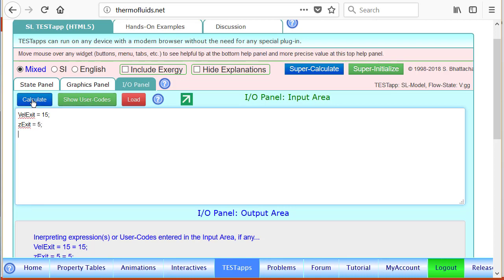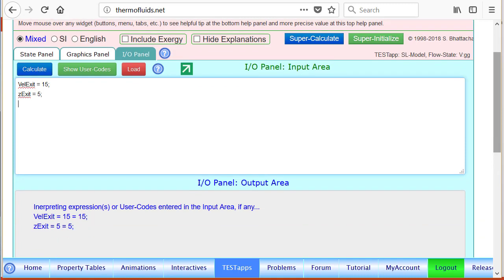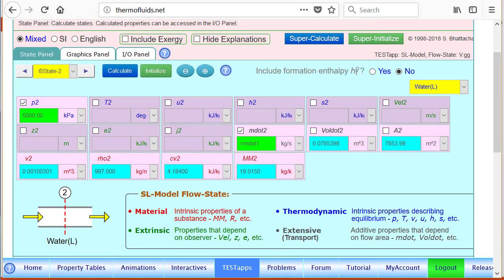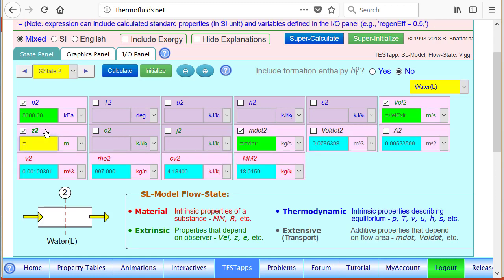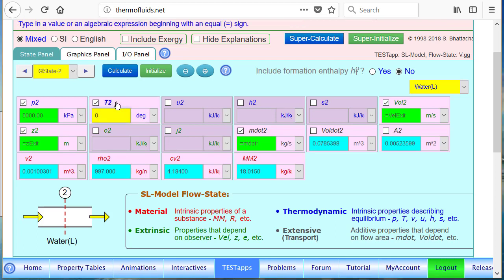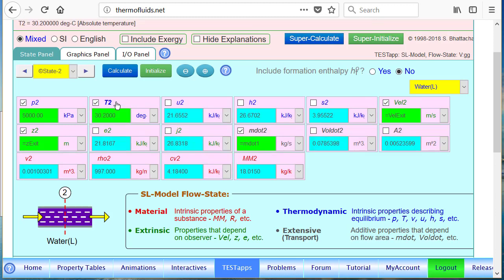So, we just do a calculate and register the changes here. Now, we can go back to the state panel, state 2, instead of writing 15, we can write vel exit. It has been registered and z should be equal z exit. So, what is the benefit of doing that? Now, we can easily go and change parameters. The temperature is given, 30.2. So, now, the entire state will be computed.